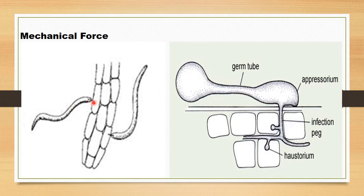Nematodes have a syringe-like structure known as the stylet. Through stylet movement, they not only obtain nutrients from the host cell but are also able to deposit their virulent proteins right inside the host cell. So they use mechanical force in the form of the stylet to damage their host.